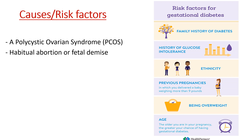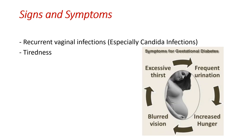A history of polycystic ovarian syndrome and habitual abortion are also risk factors. If you have a history of habitual abortion it may be because of gestational diabetes. And if you are at the age of more than 40 years, you also have a risk. The signs and symptoms include being extremely hungry or thirsty, excessive urination, recurrent thirst, and recurrent vaginal infections, especially candida infections.